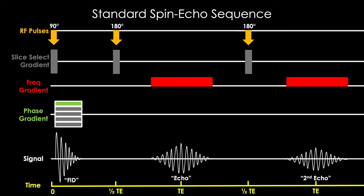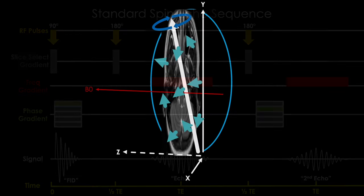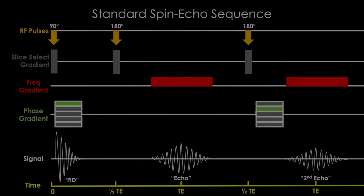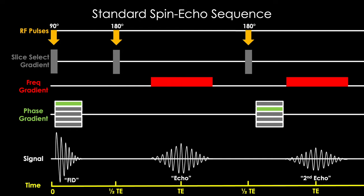A more puzzling question is what do we do about the phase encoding gradient? We no longer have a free induction decay to apply it to, but we can't create our picture without applying the different phase encoding gradients at some point. It turns out we can apply a new phase encoding gradient shortly after the 180 degree pulse and before the second echo. What exactly are we applying the gradient to? We may not have a detectable signal, but that doesn't mean we don't have protons in our slice precessing — they are all dephased and not producing signal. We can apply our phase encoding gradient, but it will cause more dephasing to our already dephased spins, which ultimately will impact the strength of our next echo.